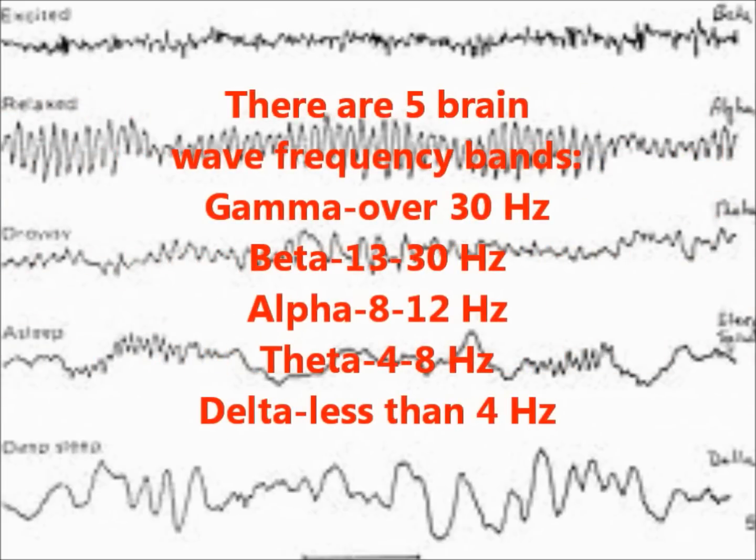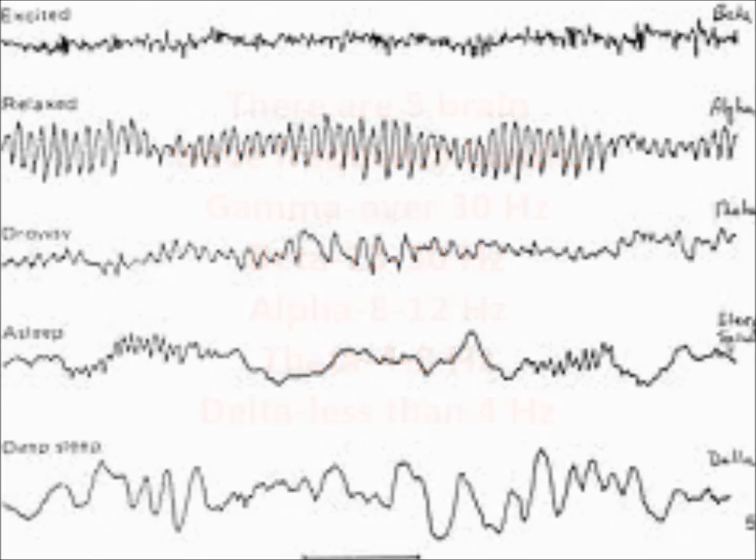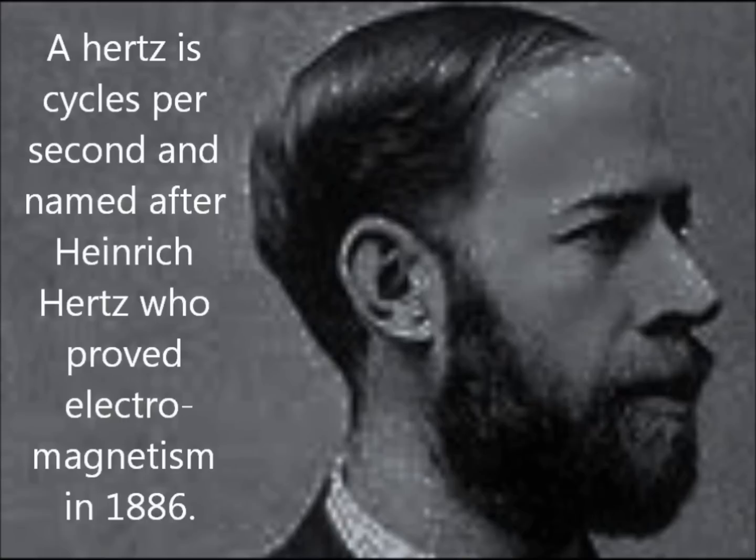There are five brainwave frequency bands: Gamma, over 30 Hz; Beta, 13 to 30 Hz; Alpha, 8 to 12 Hz; Theta, 4 to 8 Hz; and Delta, less than 4 Hz. A Hz is cycles per second, named after Heinrich Hertz who proved electromagnetism in 1886.